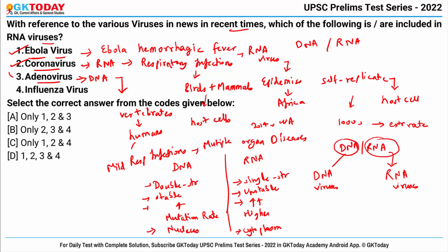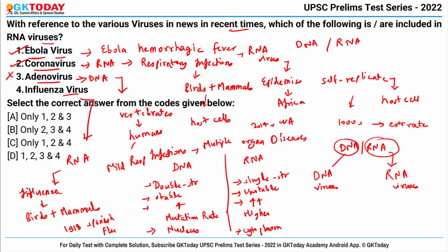Adenovirus is not correct. Fourth is influenza virus — these are a group of RNA viruses that cause influenza in birds and mammals and have been behind a number of pandemics like the 1918 Spanish flu. So the correct answer is 1, 2, and 4 — that is option C.